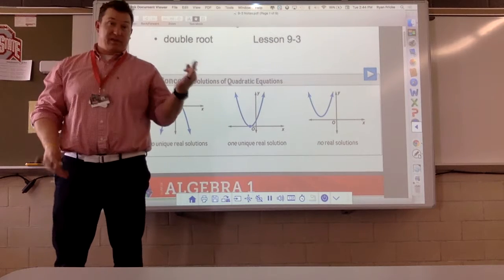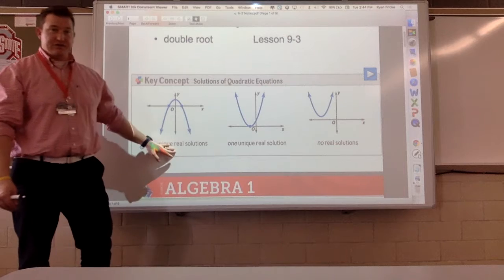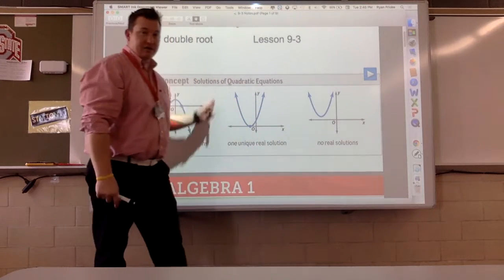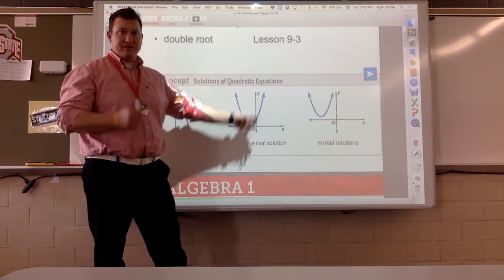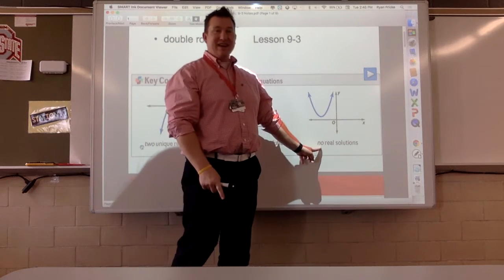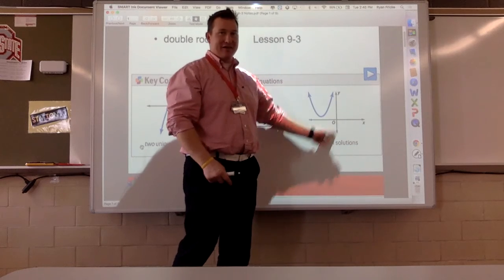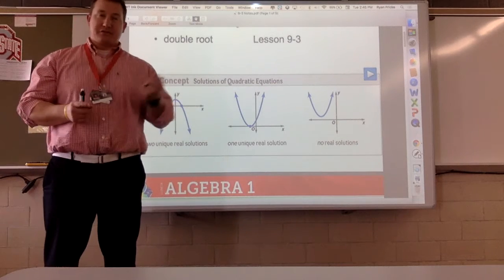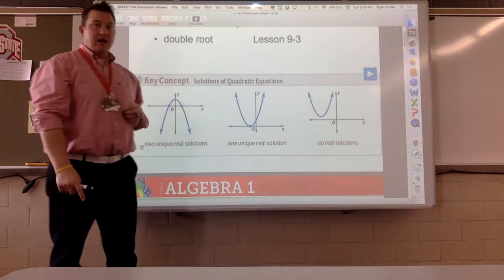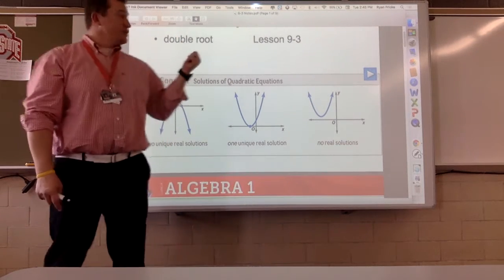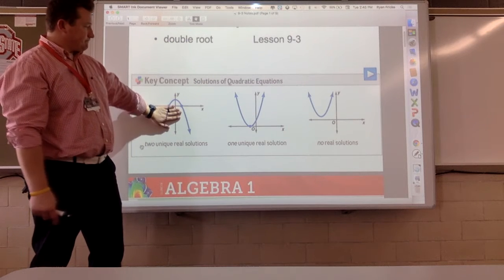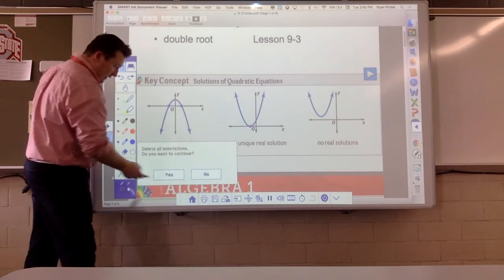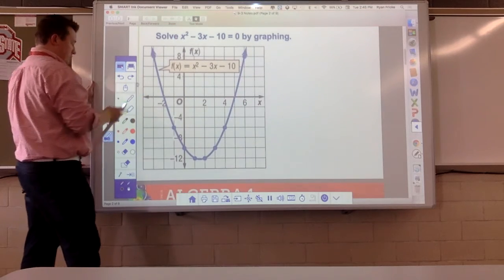And really three things can happen, okay? We can get two answers. Notice how many times this graph crosses the x-axis. We can get one answer. Notice how many times this graph crosses the x-axis. Or we can get no answers. Notice how many times this graph crosses the x-axis. And it's all about how many times do you go through the x-axis, or how many x-intercepts are there, or how many roots. So we have double roots. This is not a double root. You would think it is. This is the double root.